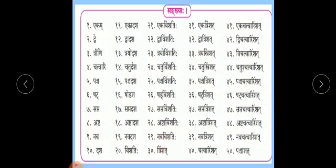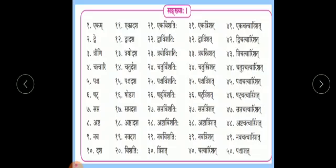Now here it is trimshat. From 1 to 9 the endings are trimshat. So you have to remember: 31 ekatrimshat, dvaatrimshat, tryastrimshat, chatustrimshat, panchatrimshat, shattrimshat, saptatrimshat, ashtatrimshat, navartrimshat, chatvarimsat. If 30 is trimshat, then from 31 to 39 the ending will be trimshat. And there is halanta here - don't forget to check all the halanta and visarga and rasva-dirgha before selecting your answers in your exam.